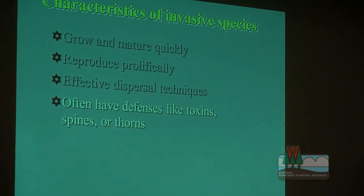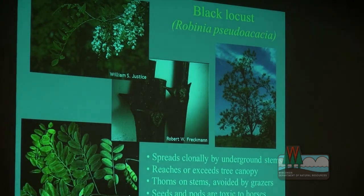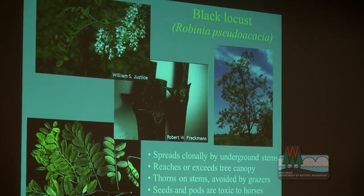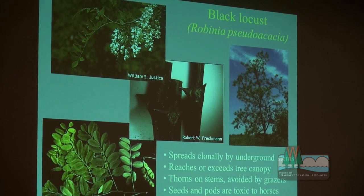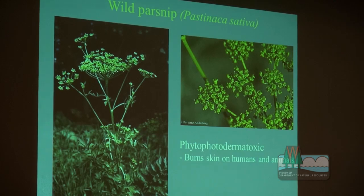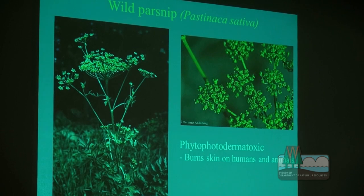A lot of these plants have something to keep away predators, whether chemical or physical like a spine. Black locust is an example with both — it has large stout spines and is clonal, spreading vegetatively with very large clones. The seeds are toxic, and it likely impacts soil nitrogen levels and may have allelopathic properties as well. Wild parsnip is particularly toxic to humans and other thin-furred mammals. It's very effective at keeping people away and preventing control when we should be controlling it.